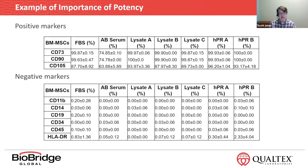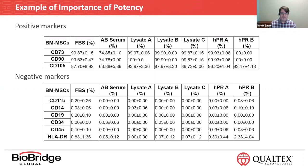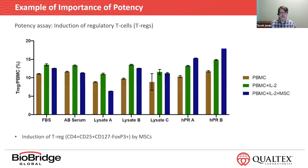If you look at the top table, those are positive markers — they should be present, and they're present in all of the cells. And looking at the negative markers, they're not present, which is what you would expect. So the bottom line is all these cells, regardless of what media supplement you added, really look the same on the outer surface based on these CD markers. But what if you actually look at potency of these cells — is it the same or not?